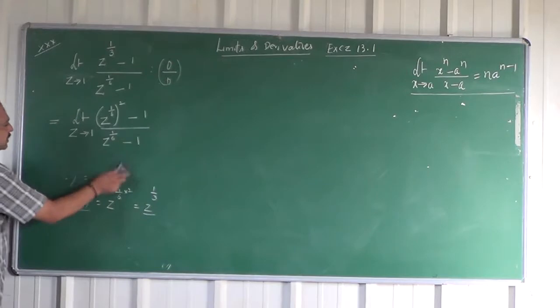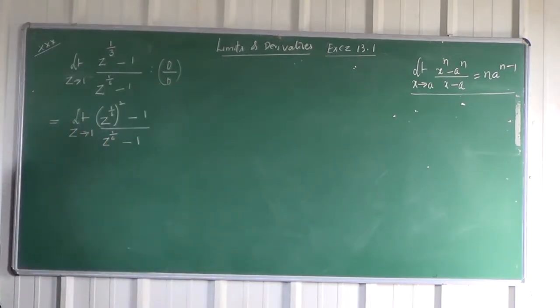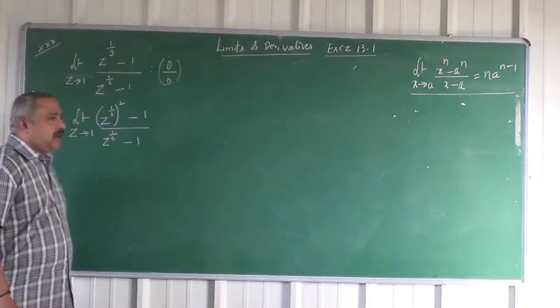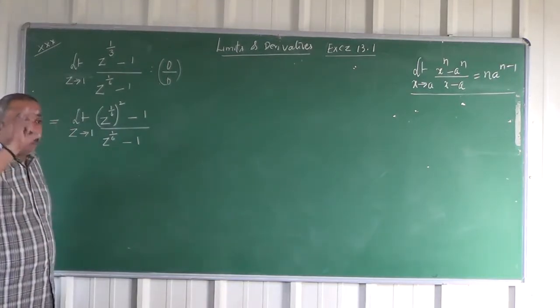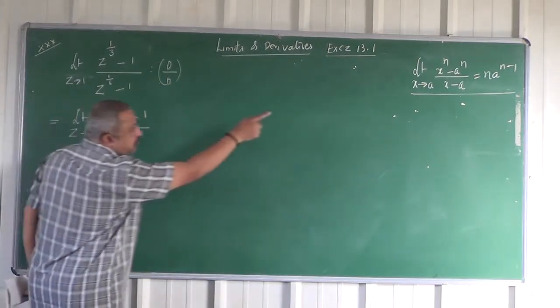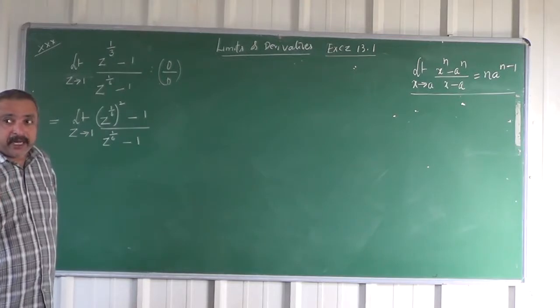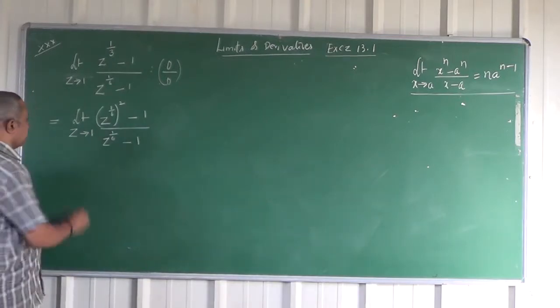This is the only step, the secret step of this problem. Now you can think of factorization. Don't try to think of matching with that formula. That is also one of the methods of doing, but in this problem there is a scope for factorization.